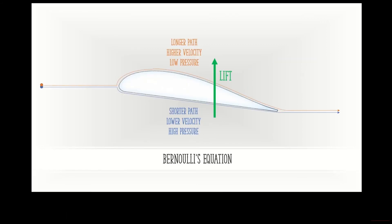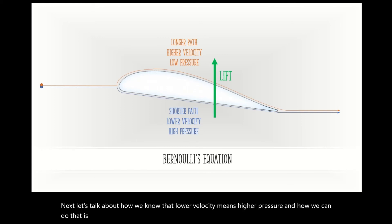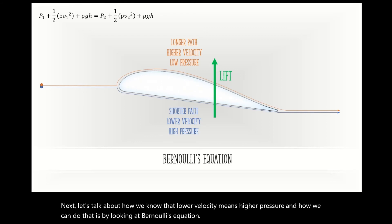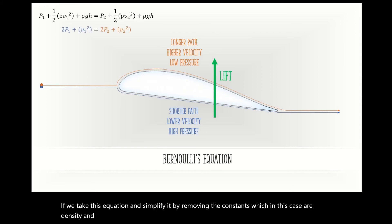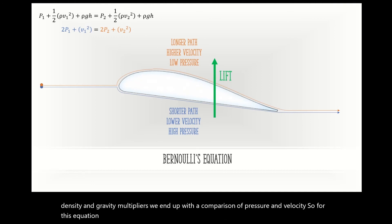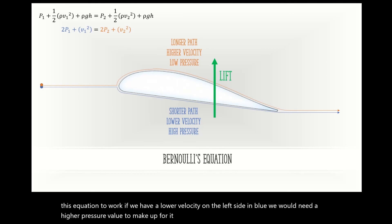Next, let's talk about how we know that lower velocity means higher pressure, and we can do that by looking at Bernoulli's equation. If we take this equation and simplify it by removing the constants — in this case the density and gravity multipliers — we end up with a comparison of pressure and velocity. So for this equation to work, if we have a lower velocity on the left side in blue, we would need a higher pressure value to make up for it, and vice versa for the higher velocity in orange on the right side of the equation.